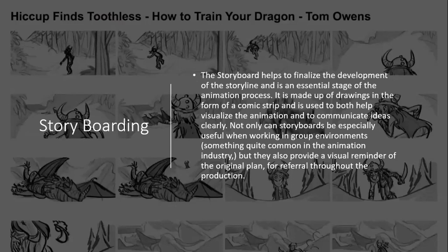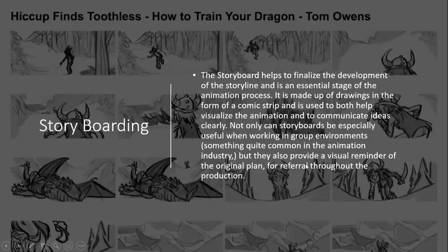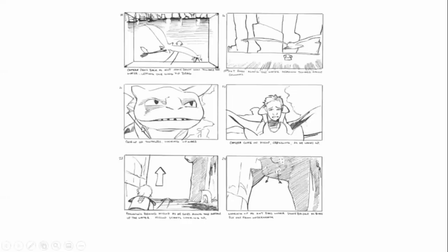Storyboarding — this is a beautiful example from How to Train a Dragon. In a storyboard, it does not have to be super crisp and clear like this. According to DreamWorks, this is rough — but it doesn't even have to be this level. It can be stick figures. The whole point is to understand camera angles, depth of field, and similar concepts.